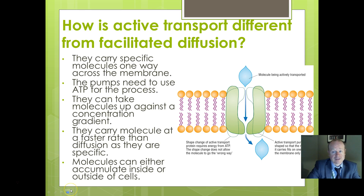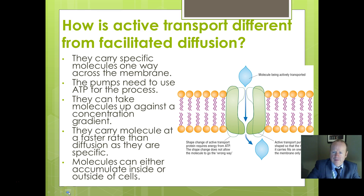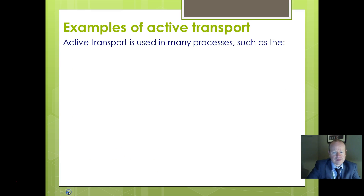Carrier proteins move specific molecules one way, against the concentration gradient. This does allow things to happen faster than diffusion and makes molecules accumulate in a particular place. We'll think about why that might be useful a bit later.